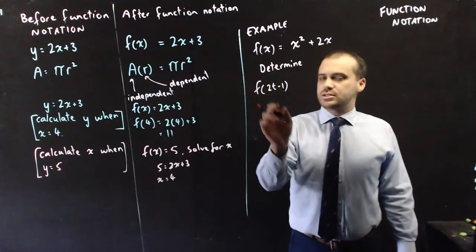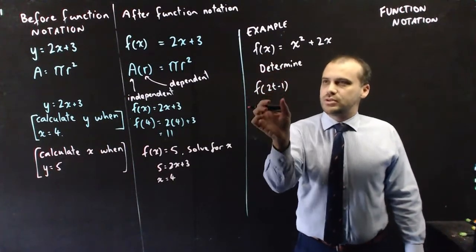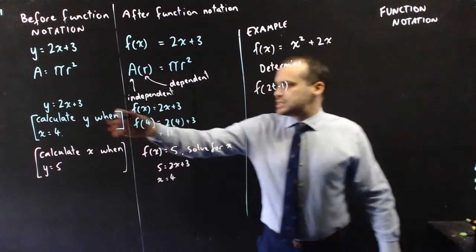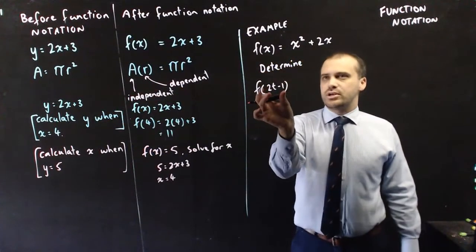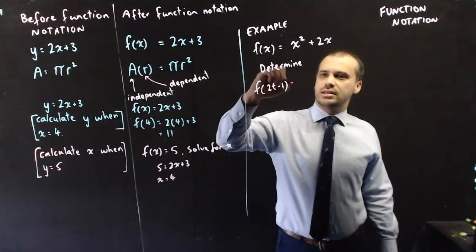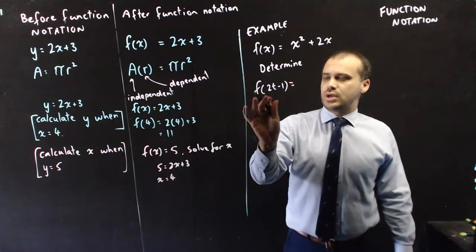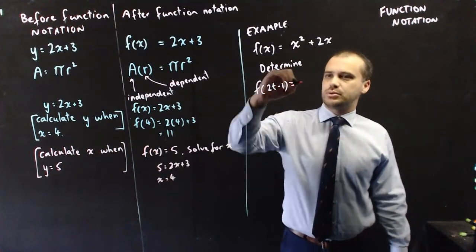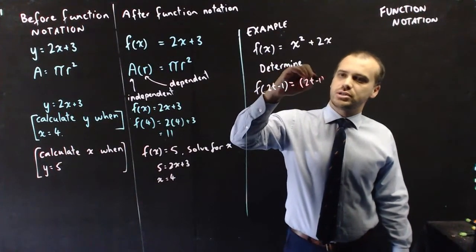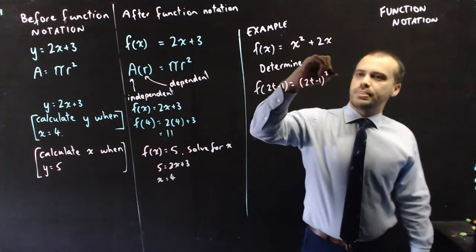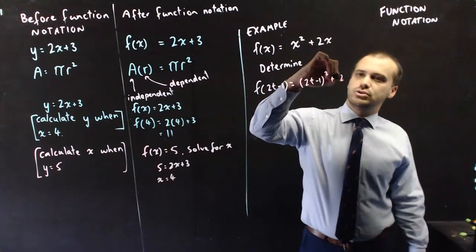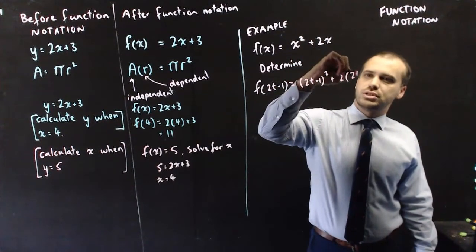Sub 2t minus 1 in for x. And in this case you'd have to sum it into two different places. So f of 2t minus 1 is equal to 2t minus 1 squared plus 2 times 2t minus 1.